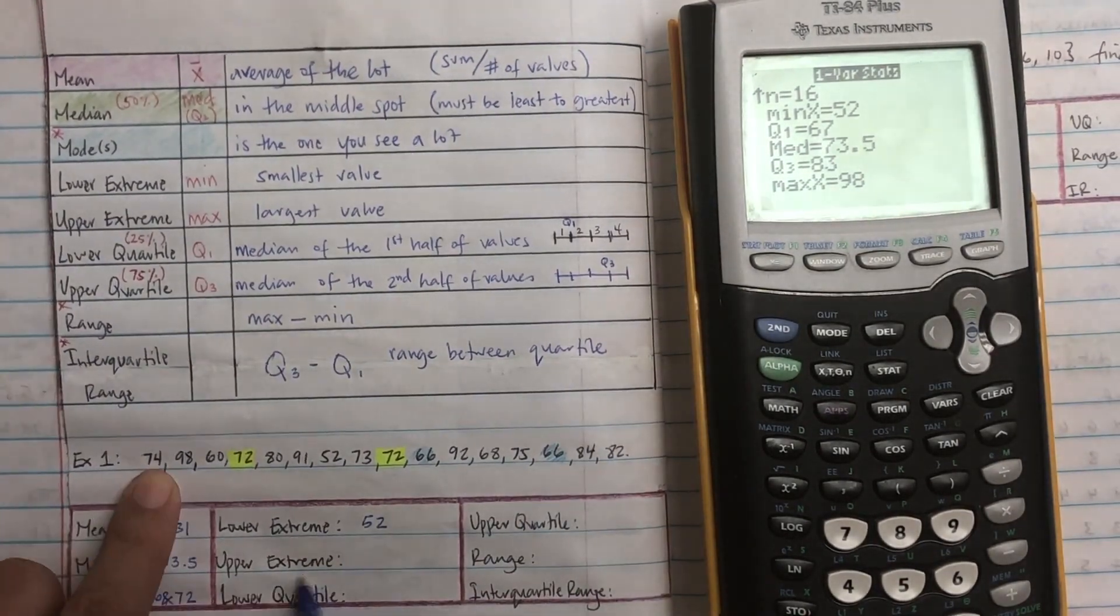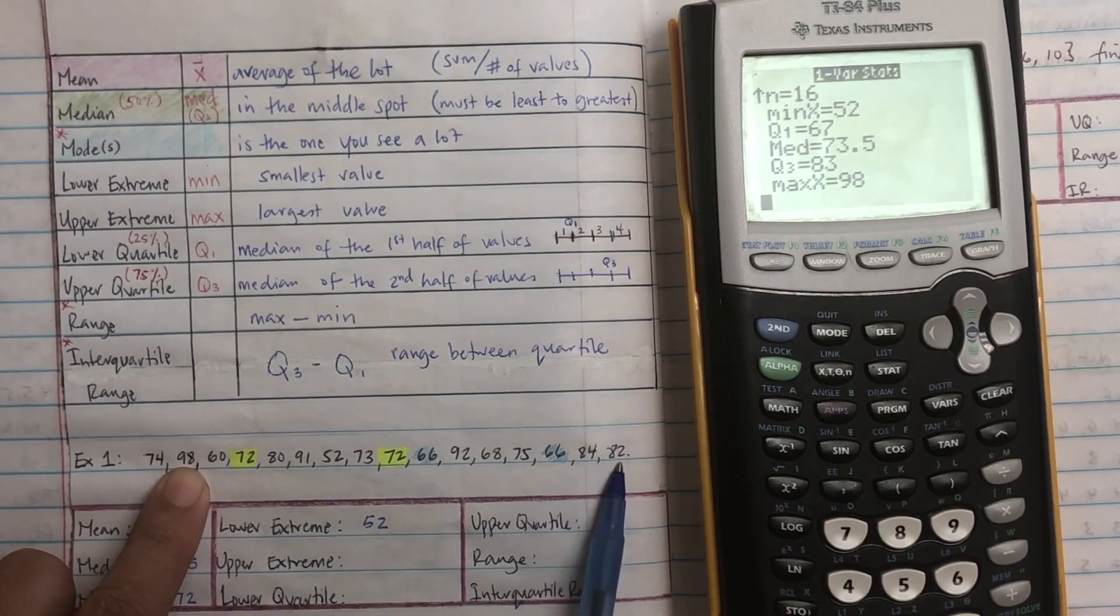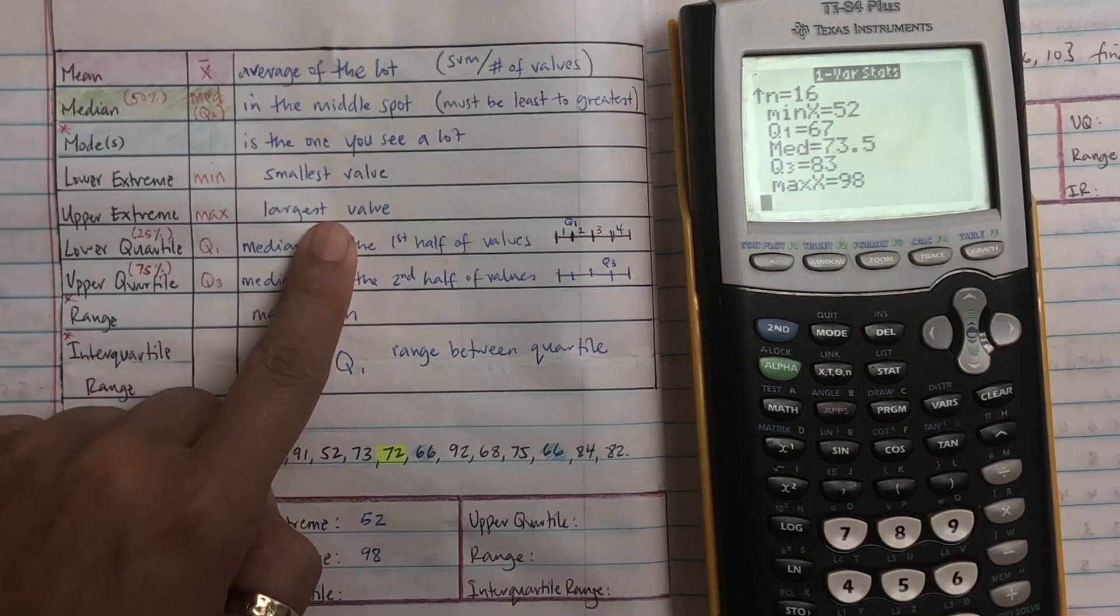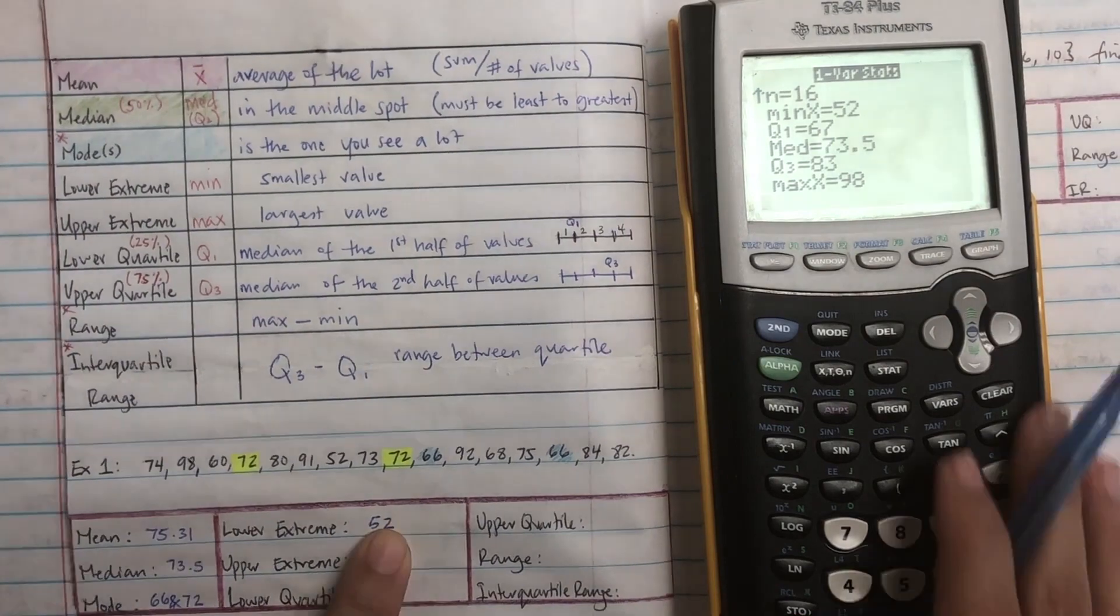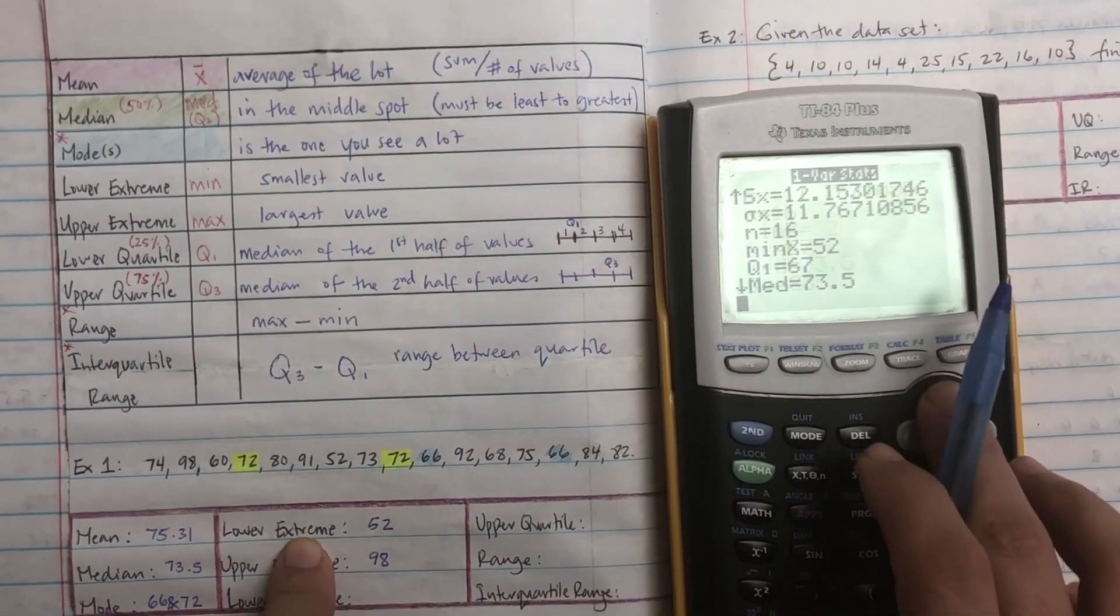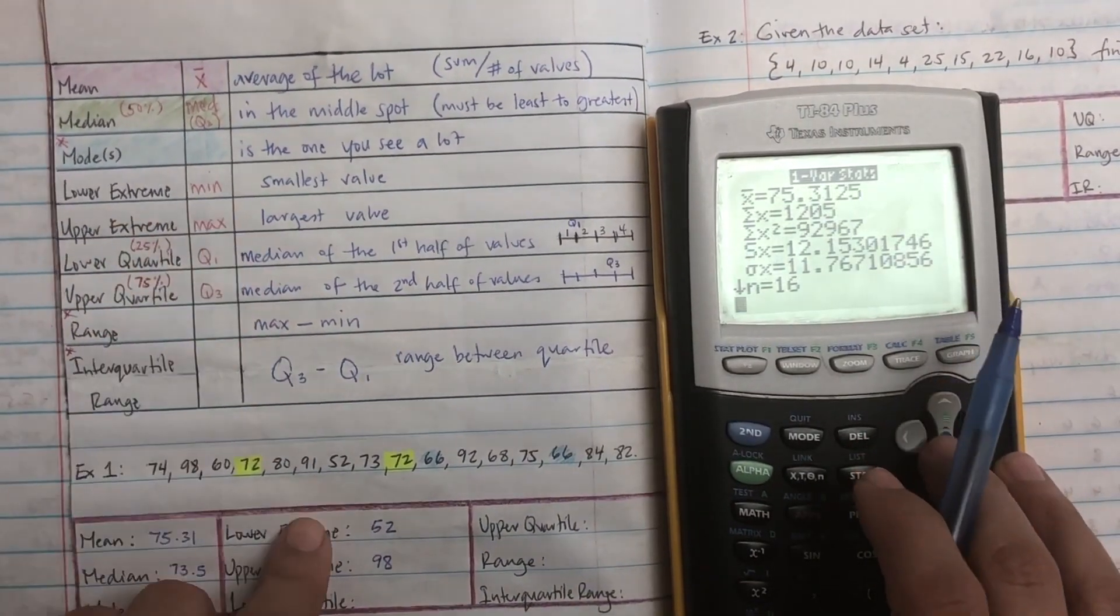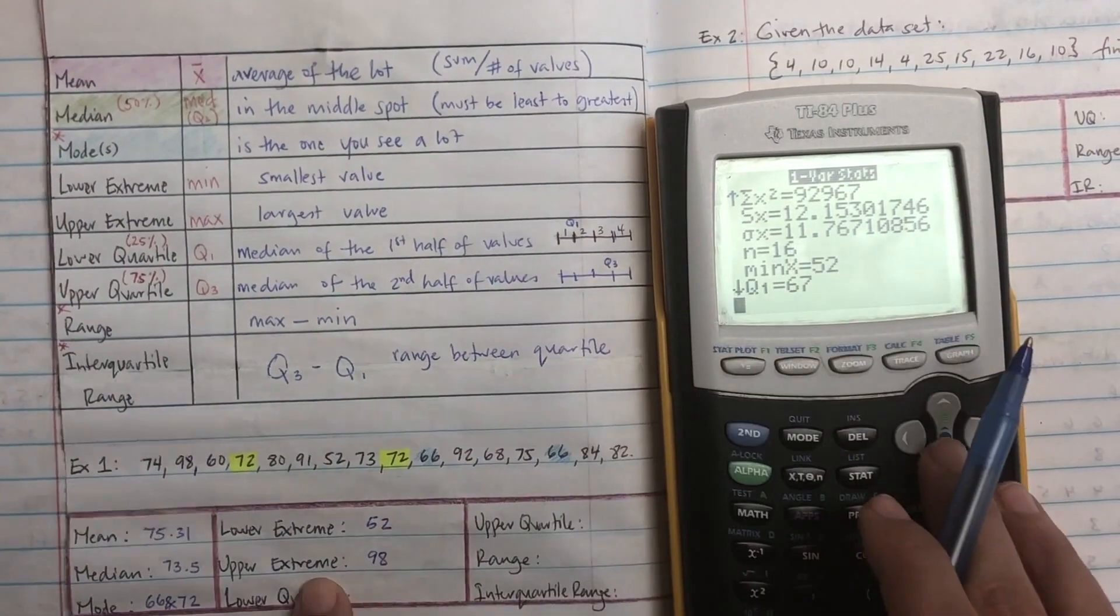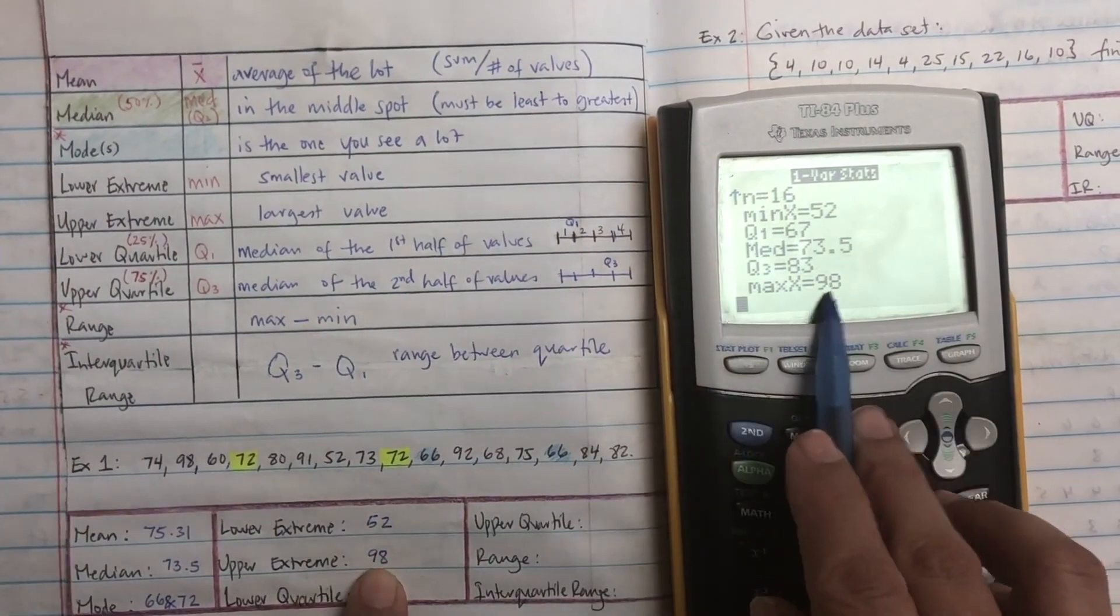What's the highest number? You look here, the highest number I can see is 98. But again, I'm just not sure how to do the calculator. Lower quartile, so that's Q1. So I'm looking for something that says Q1. So you see the lower extreme, the minimum is 52, and then if you go down the maximum is 98.